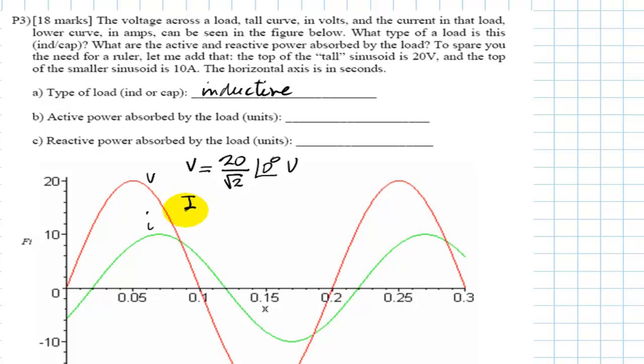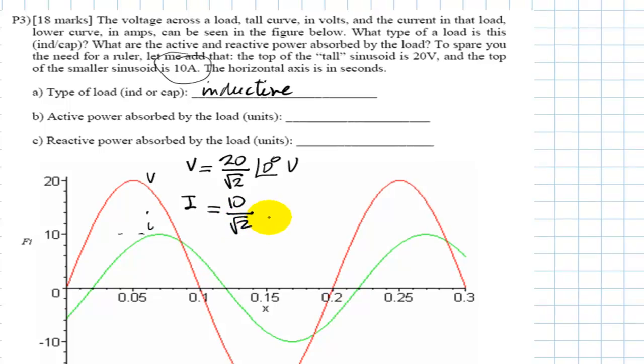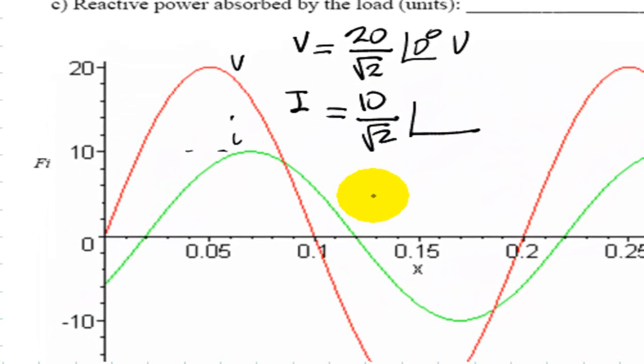And the current? The phasor for current, the RMS or IEEE phasor is peak value 10, which is given. We can measure that, or we can just read it here. 10 amps divided by root 2. And the phase, what is the phase of that one?